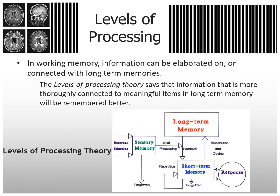Levels of Processing. In working memory, information can be elaborated on or connected with long-term memories. The Levels of Processing Theory says that information more thoroughly connected to meaningful items in long-term memory will be remembered better. If you can connect it to something meaningful to you, you're more likely to remember it.